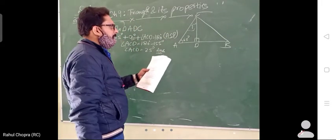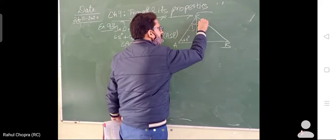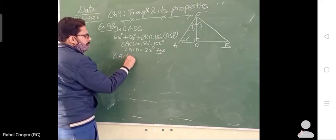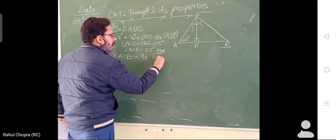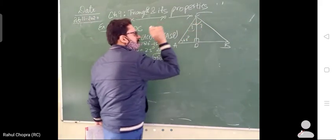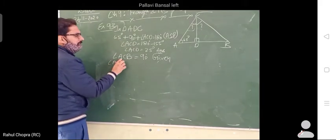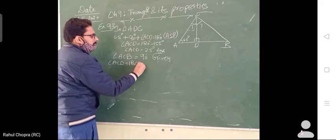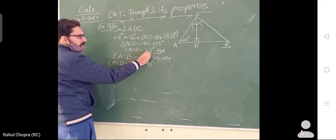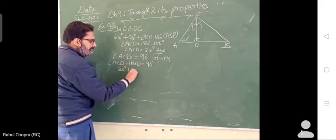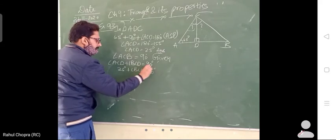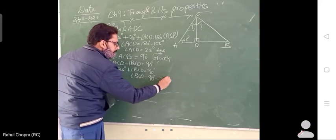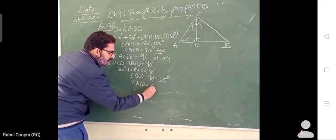Now you have to find angle BCD. The whole angle ACB is given as 90 degrees. We write: angle ACB equals angle ACD plus angle BCD. We already found angle ACD is 25 degrees. So 25 plus angle BCD equals 90 degrees. Therefore angle BCD is equal to 90 minus 25, which is 65 degrees.